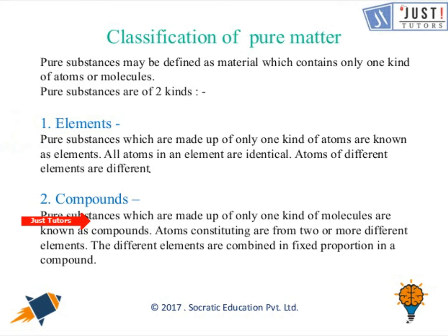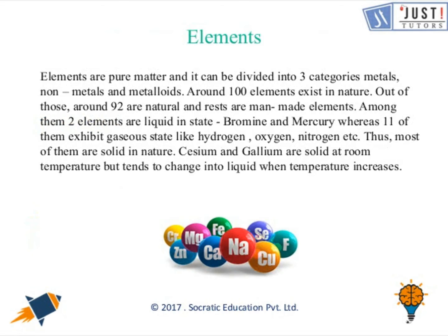Elements are basically made up of only one kind of atoms, while compounds are made up of only one kind of molecules. An element is a basic form of matter that cannot be broken down into simpler substances by any chemical reaction, and it is divided into three categories: metals, nonmetals, and metalloids.